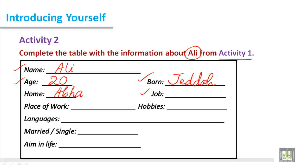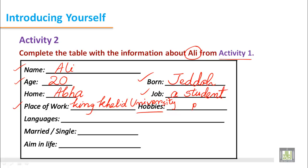Job — what does he do? We find in the paragraph that Ali is a student. Place of work — as he is a student, that means where does he study? We can write King Khalid University, College of Languages and Translation. Hobbies — what does he like to do in his free time? He likes to play football, swim, and read books.